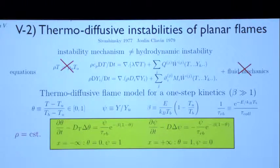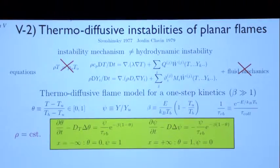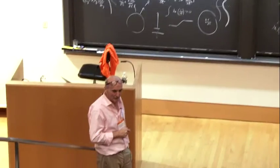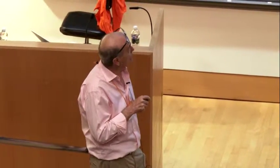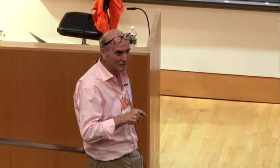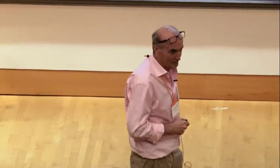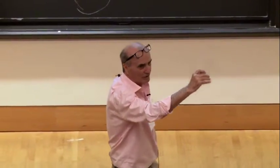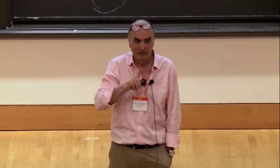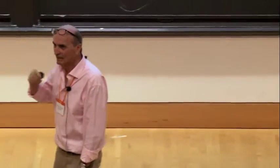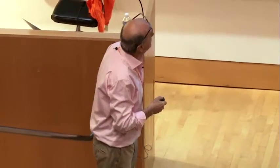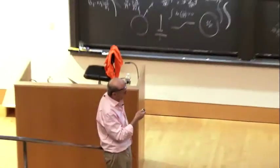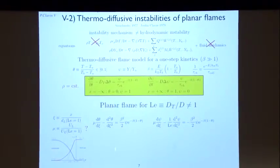Here is a key point that we pointed out with Guy Joulin—this was part of his thesis. One has to be careful when taking the large activation energy limit, because it turns out that the interesting domain for the diffusion coefficients is of order one over beta, which is very small. We have to use what is called in mathematics a distinguished limit: let beta go to infinity, but assume the difference between the two diffusivities is as small as one over beta. This is the key point of the analysis, and it took some time for people to realize that, even for us.